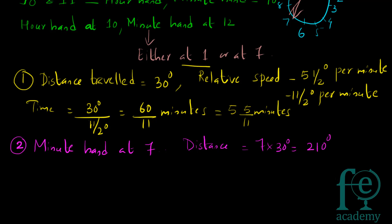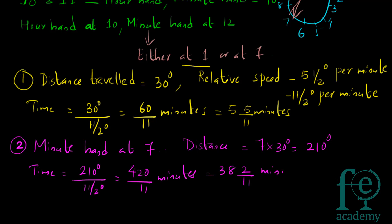For the second option, time equals distance divided by relative speed: 210° ÷ (11/2)° per minute = 420/11 = 38 2/11 minutes. So the final answer is either 5 5/11 minutes past 10 or 38 2/11 minutes past 10 — these are the two times when the hour and minute hands are at right angles between 10 and 11.